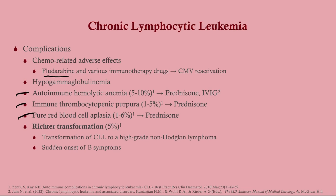Autoimmune complications like autoimmune hemolytic anemia, ITP, and pure red cell aplasia can occur and are treated with prednisone. Then there is the Richter transformation — a chronic leukemia transforming either into an acute leukemia (less commonly) or, most commonly, a diffuse large B-cell lymphoma, which is a type of non-Hodgkin lymphoma. You would suspect this if there is sudden onset of B symptoms while watchfully waiting or while treating the patient.